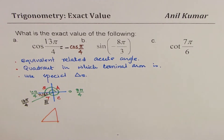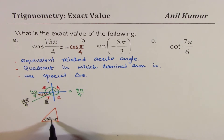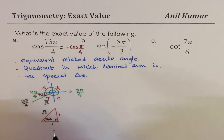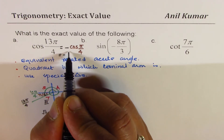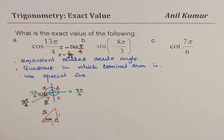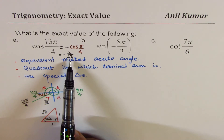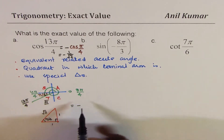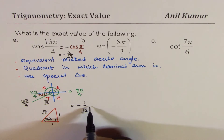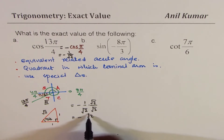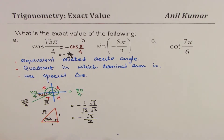To find the exact value, we use the special triangle with π/4, which has sides 1, 1, and √2. So cos(π/4) = 1/√2, and with the negative sign the value is -1/√2. We rationalize by multiplying numerator and denominator by √2, giving us -√2/2 as the final answer.